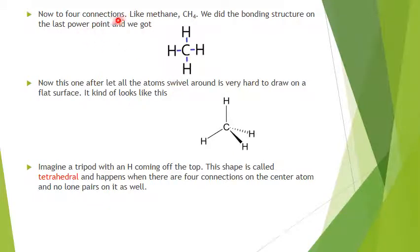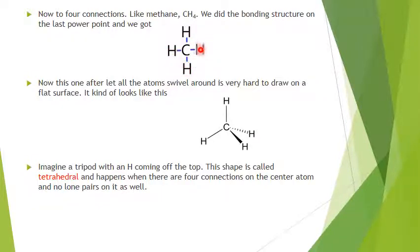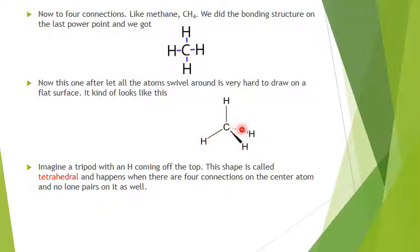Now let's look at four connections — methane, CH₄. This is its bonding structure, but it doesn't look like the flat drawing at all. If this were two-dimensional space, the molecule would look like the flat drawing. But in three-dimensional space, all the hydrogens can push out from each other in and out of the plane, and what you actually end up with is something like a tripod with an H coming off the top. This particular shape is called tetrahedral — it has four connections on the center atom and no lone pairs.